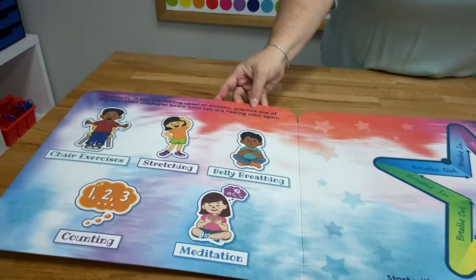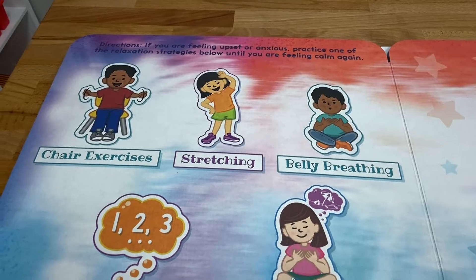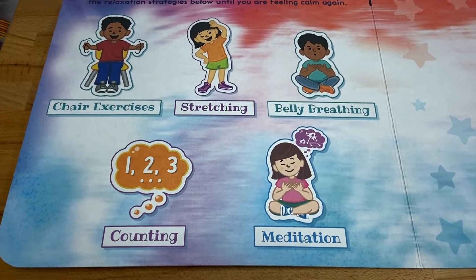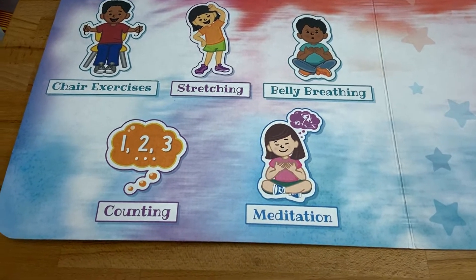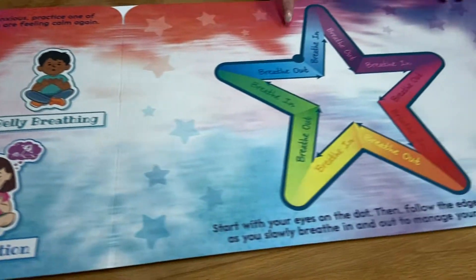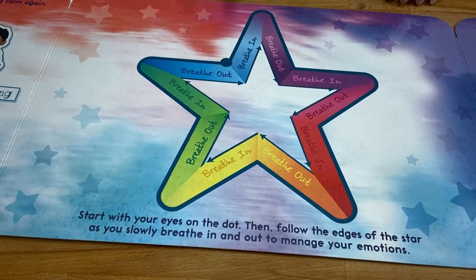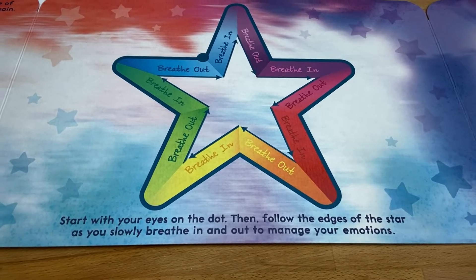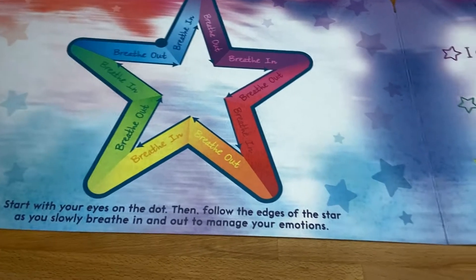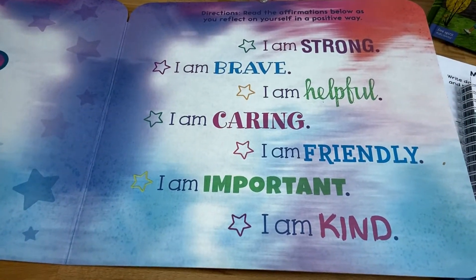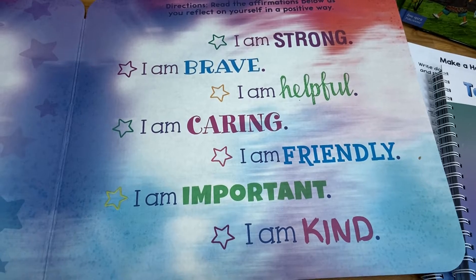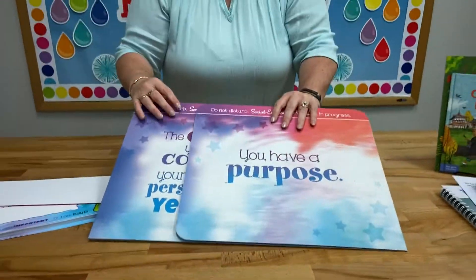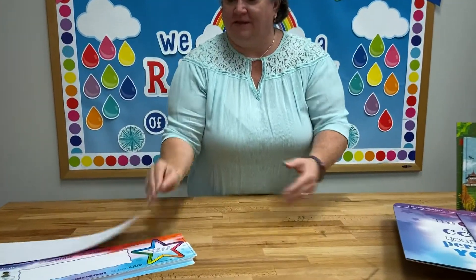The next thing I want to show you is our social emotional privacy shield. I love the colors and the sayings on here: You have a purpose. Be the best version of yourself today and every day. And my favorite: The only person you should compare yourself to is the person you were yesterday. The student-facing side says: if you are feeling upset or anxious, practice one of the relaxation strategies below until you are feeling calm again — chair exercises, stretching, belly breathing, counting, meditation.